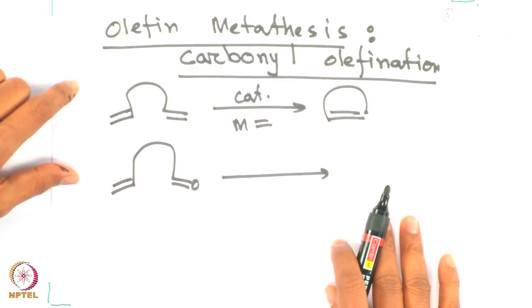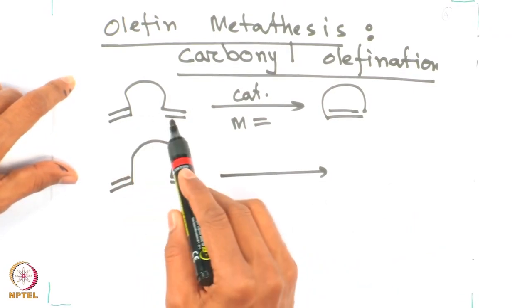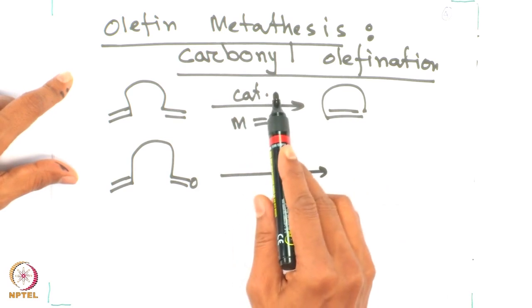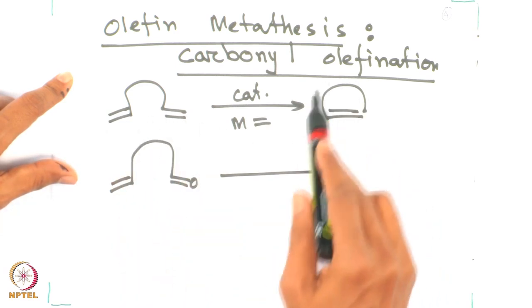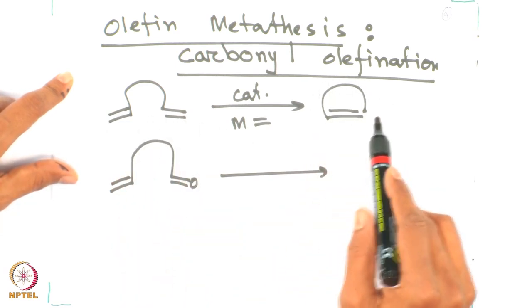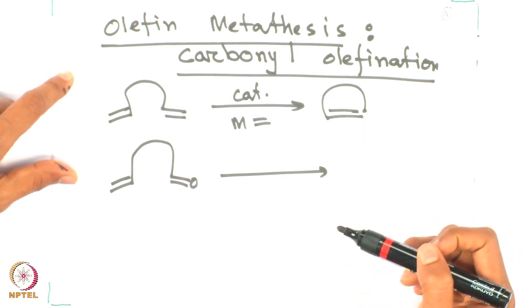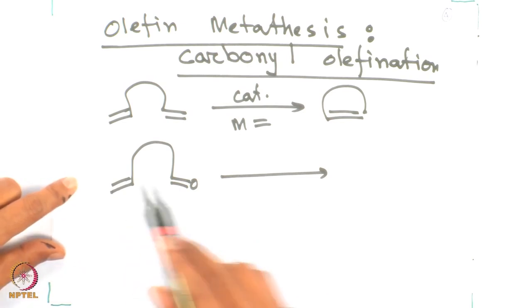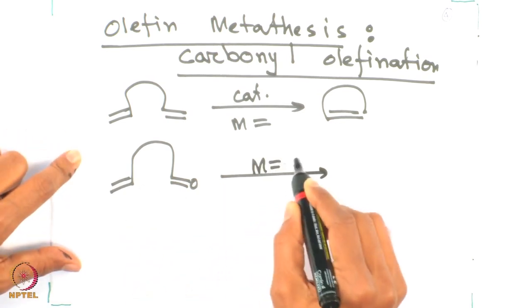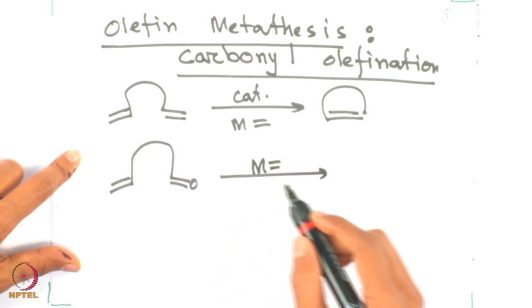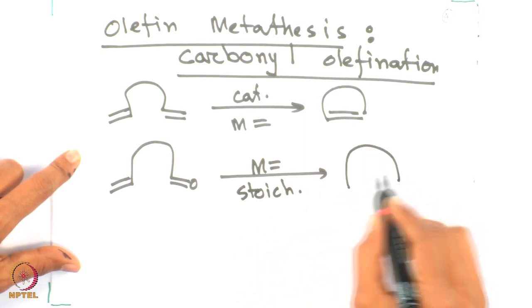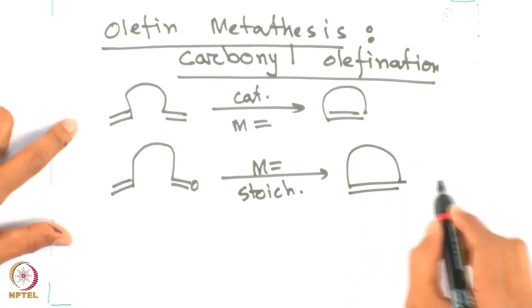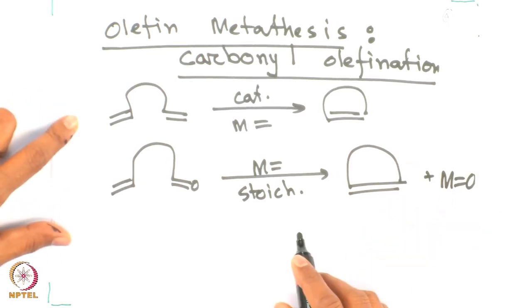The answer is yes, you can do that. Let us look at one of those examples. This is the olefin metathesis you are familiar with — the catalytic metal carbene is reacted with a diolefin to give you a larger ring containing olefin compound. What we have over here is a terminal olefin and a ketone, and in these cases a metal carbene, but it has to be a stoichiometric version, can give you the same product, and of course you are going to get a metal oxide in the process.